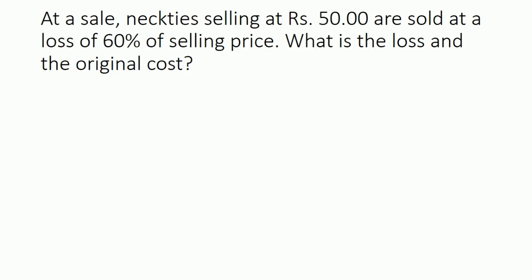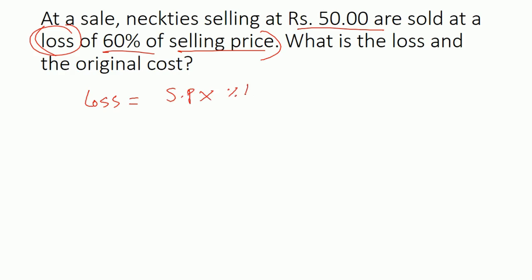Now let us go to the third question. At a sale, necklaces selling at 50 rupees are sold at a loss of 60 percent of the selling price. Whenever they talk about loss or gain, they always state it about the selling price, because that is how it is measured. What is the loss and the original cost of the material? This is about loss, so we write: loss equals selling price into percent loss. The selling price is 50 and percent loss is 60, written as 60 by 100. The loss we are getting from here is simply 30 rupees.